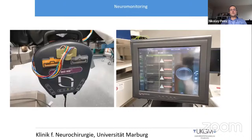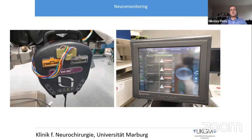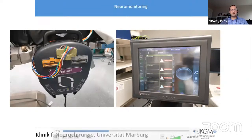Key steps for minimally invasive XLIF are pre-operative planning, needle electrode setup, patient positioning, fluoroscopic localization, dissection to the psoas muscle, neuromonitoring through the psoas muscle, sequential dilation, retractor placement, disc preparation, implant insertion, and closure. Pre-operative planning includes examining AP and lateral lumbar X-rays to identify anatomic abnormalities — for example, a high iliac crest at L4-5 may prevent straightforward access. Choosing the side of approach is usually left side; however, for degenerative scoliosis the approach is usually from the side of the convexity.